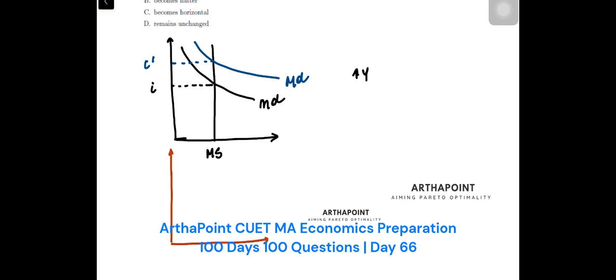The locus of these two points, income and interest rate, is your LM curve. So this is point A, this is point B. Point A is some Y and some I. Point B is when income increases, interest rate is increasing.